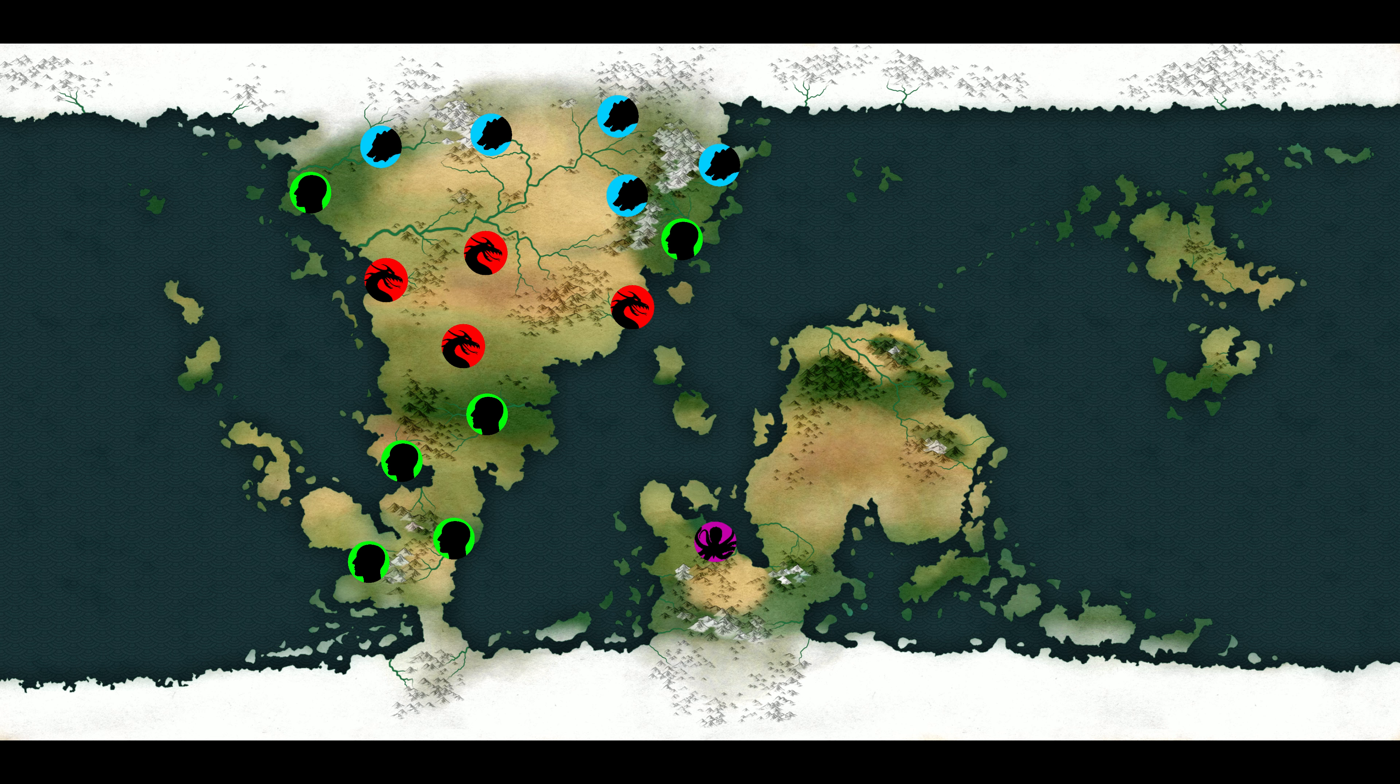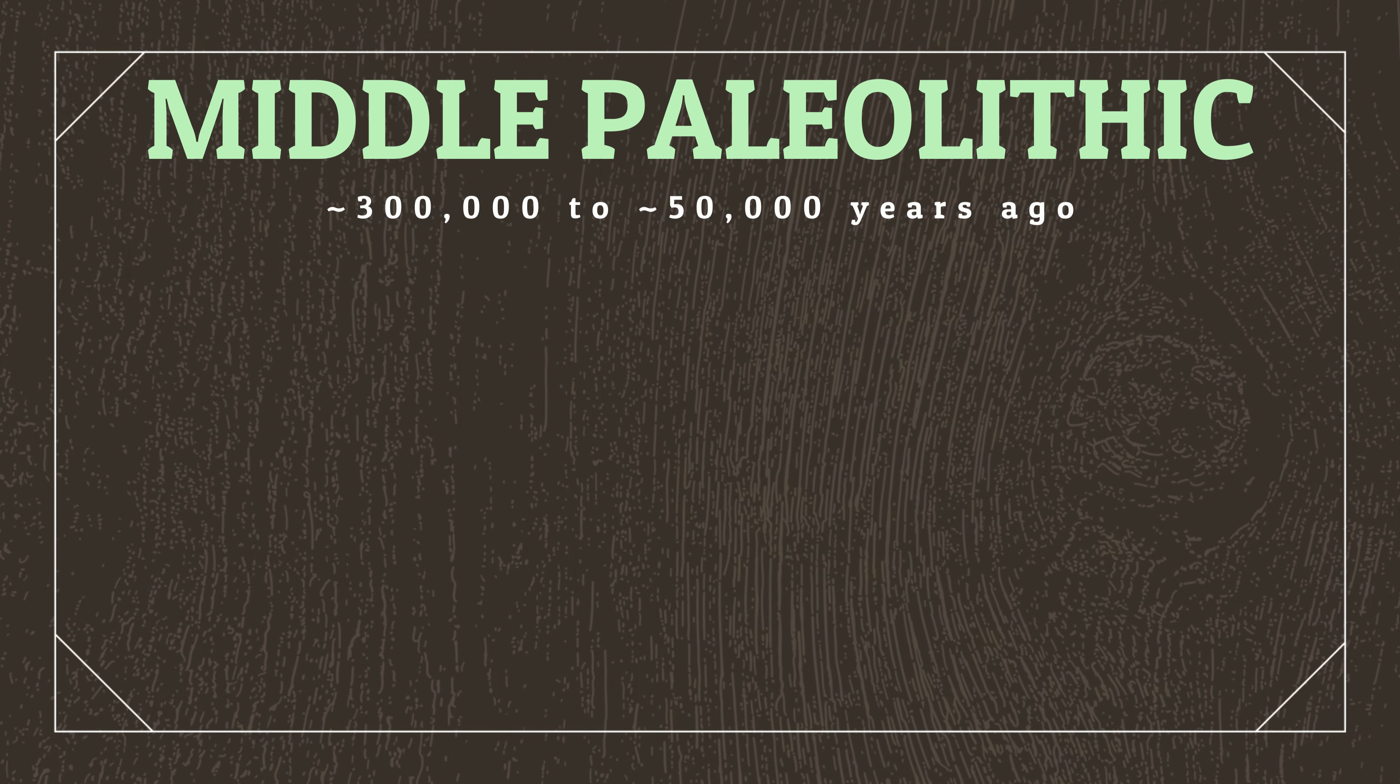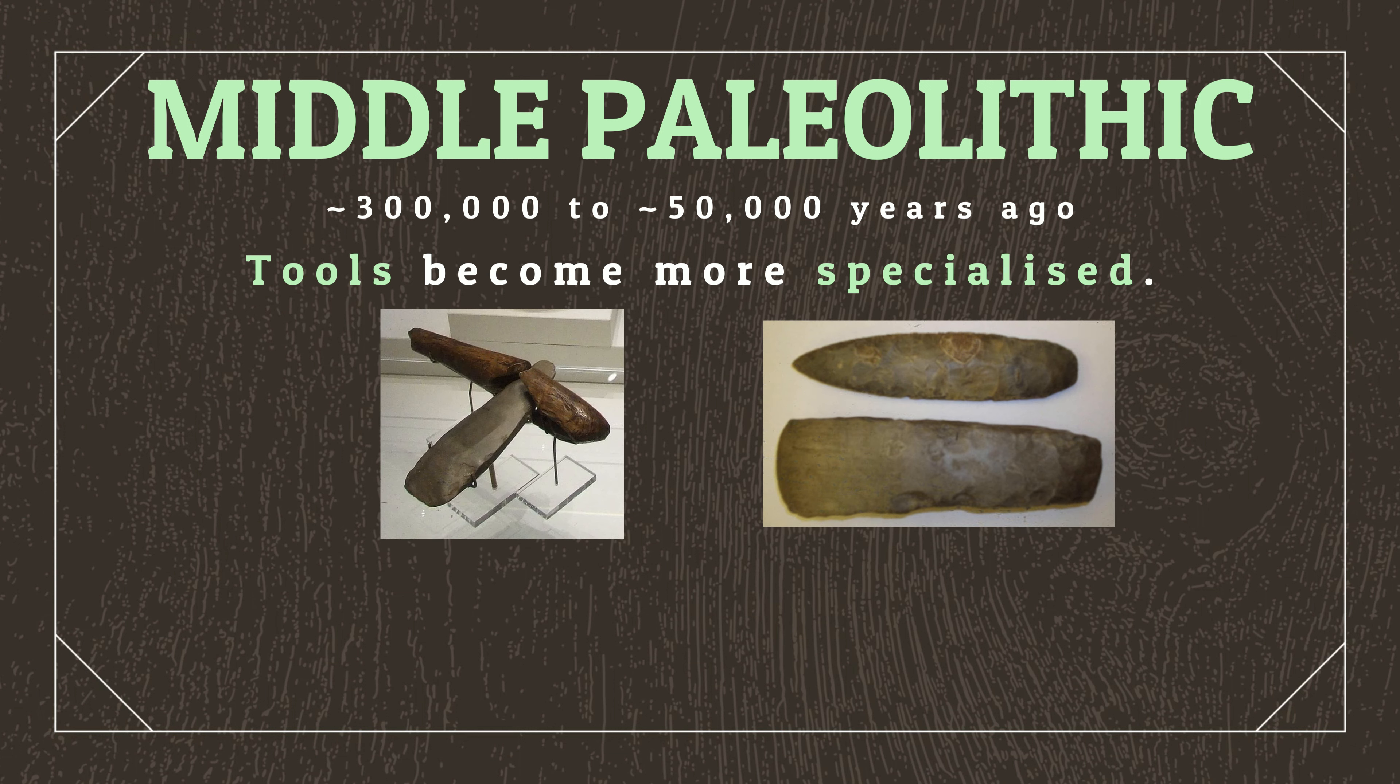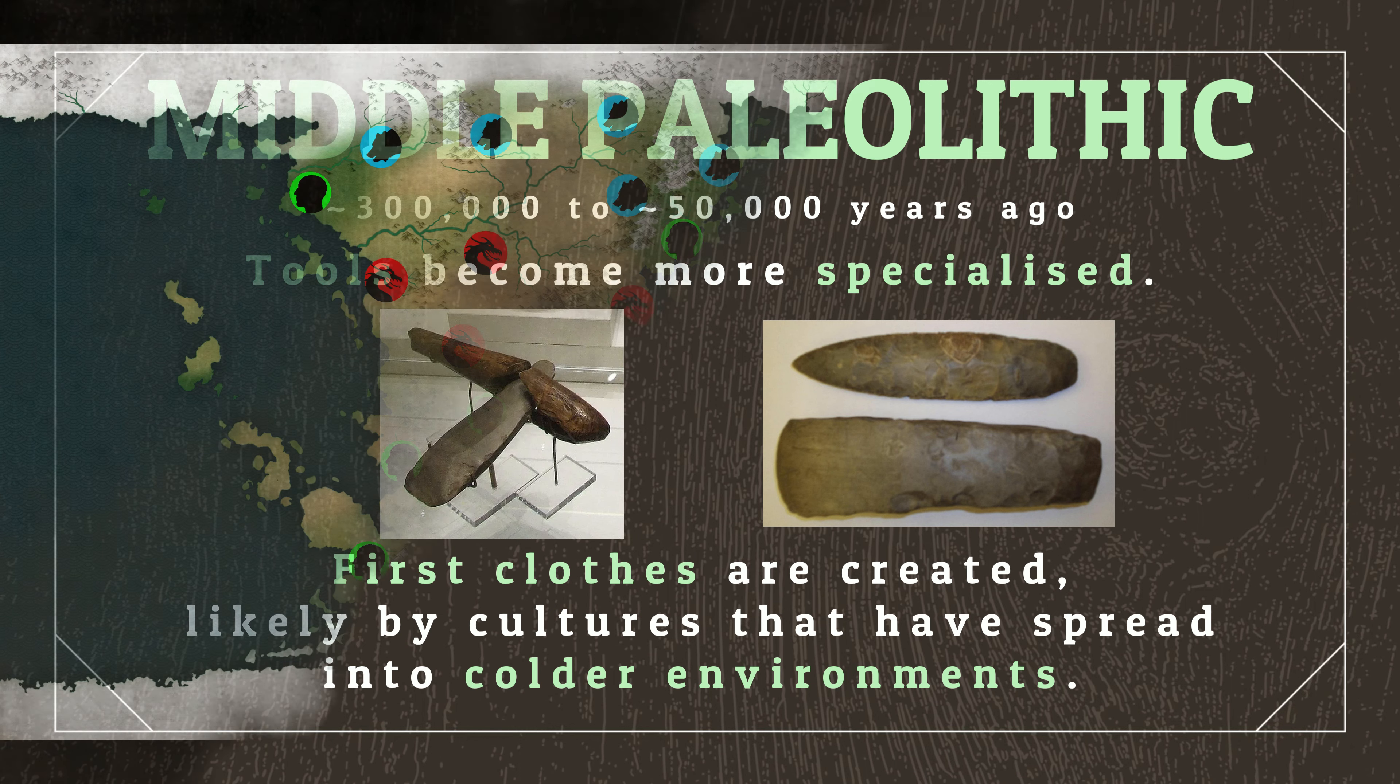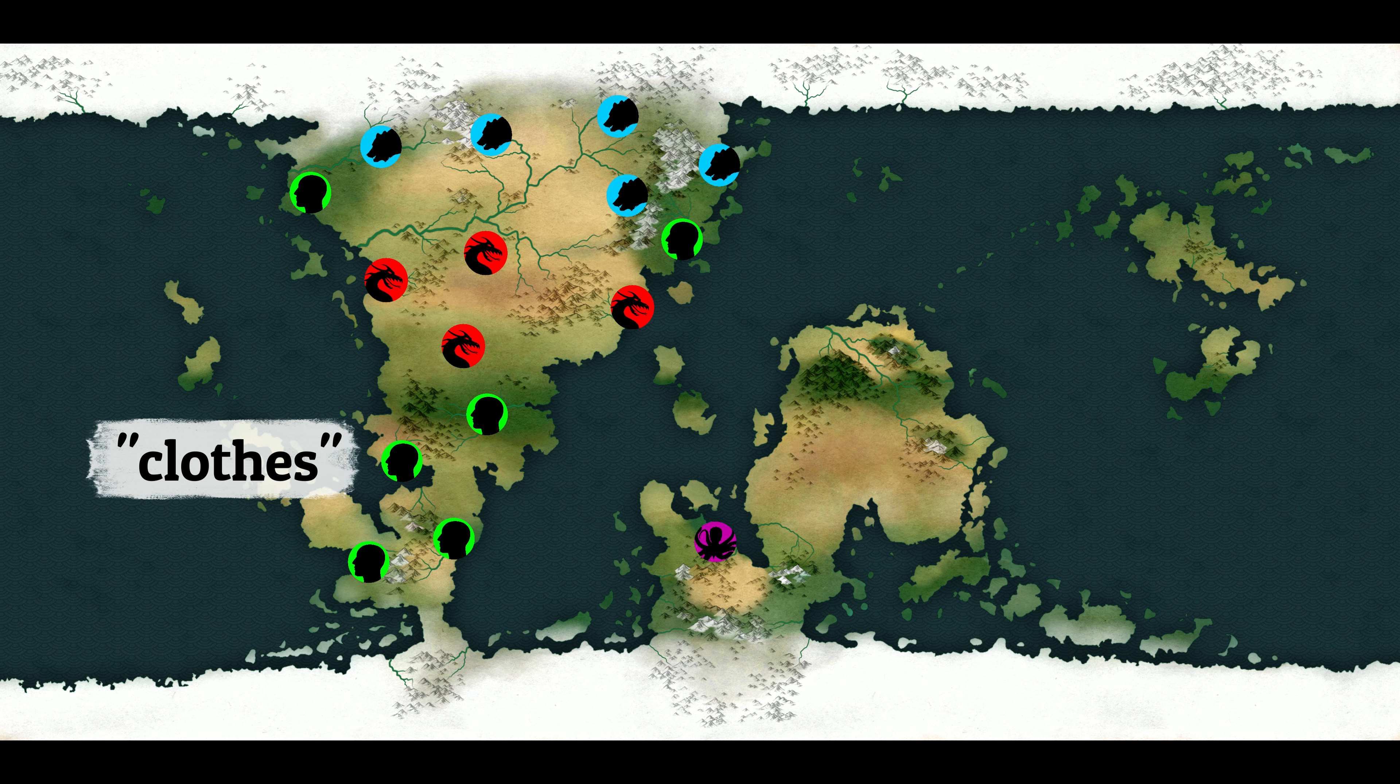As the Paleolithic progresses into the Middle Paleolithic, crude tools will be tinkered with to better suit specific tasks, and simple handles may be fastened to them, creating the first tools that we would recognize today, like knives, hammers, and axes. Also, while archaeologists disagree on the exact dates, there is strong suggestion that it's during this period that the first clothes were created, likely by the cultures that spread poleward into colder climates than they were used to.